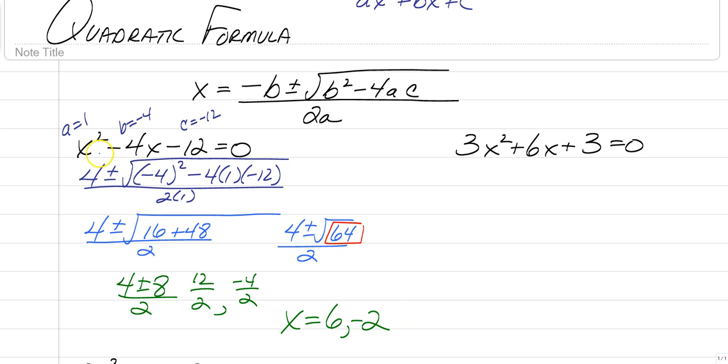4 plus 8 is 12 over 2, and 4 minus 8 is negative 4 over 2. So finally, x is equal to 6 and negative 2. I want you to go all the way back to the beginning and remember you could have just factored that, x minus 6 and x plus 2. But again, the whole purpose of this video is to show you how to use the quadratic formula. Now that you know how to use it, it could be used for any quadratic. You can only factor a quadratic when it's factorable. If not, you're going to need to use the quadratic formula or completing the square.